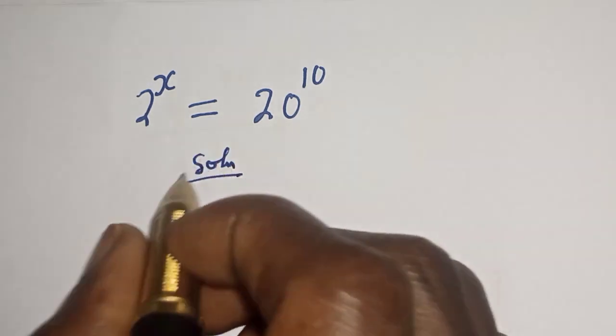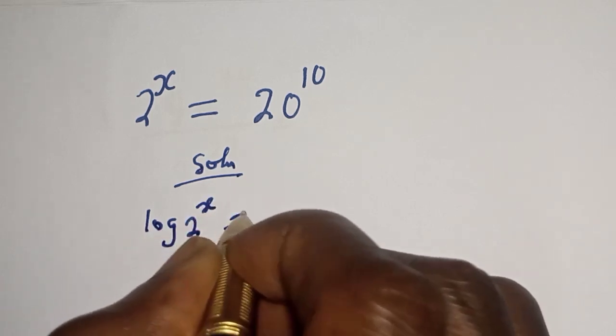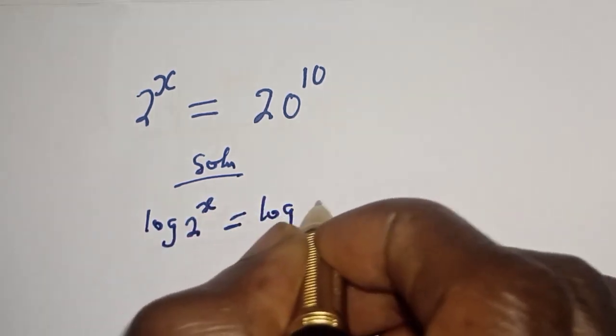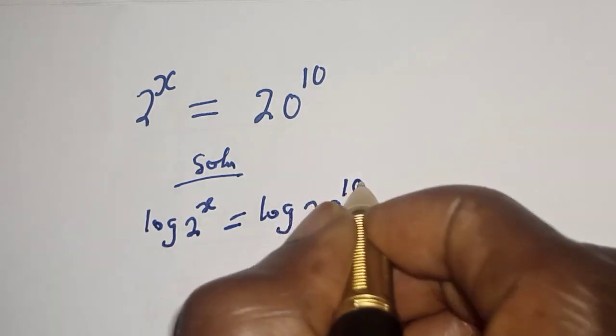Let's take the log of both sides. Log 2 raised to power x is equal to log 20 raised to power 10.